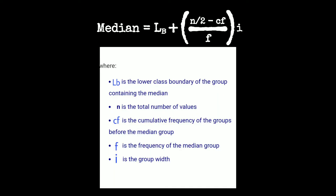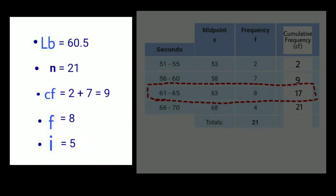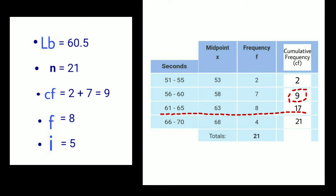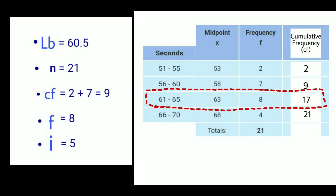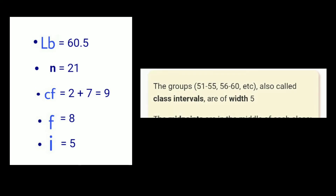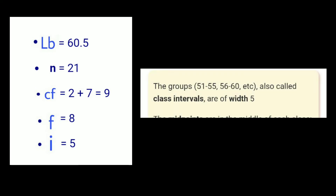Median equals LB plus the quantity of N over 2 minus CF, divided by F, times I. Where LB is the lower class boundary of the group containing the median, N is the total number of values, CF is the cumulative frequency of the groups before the median group, F is the frequency of the median group, and I is the group width or interval.